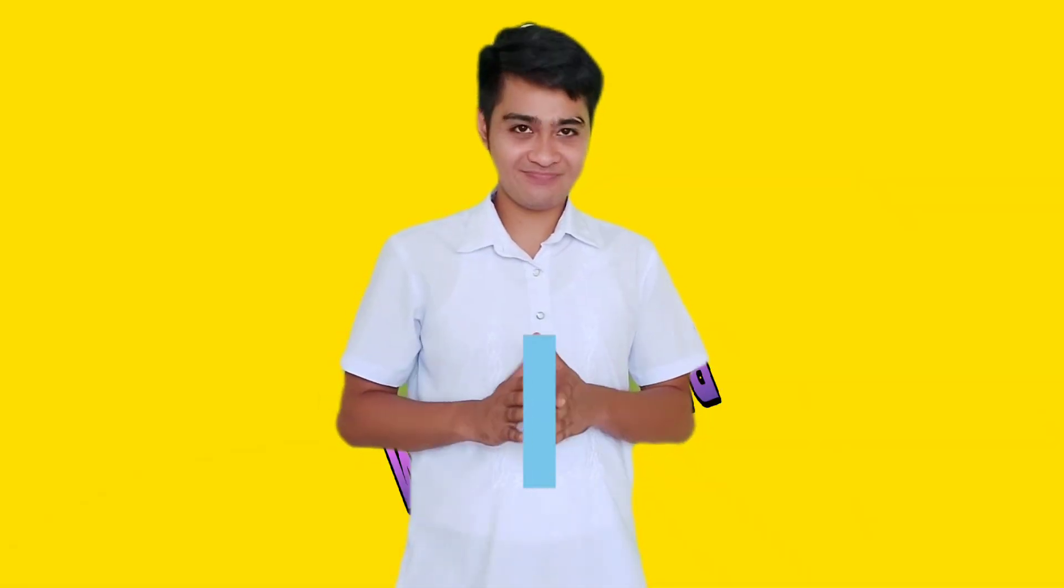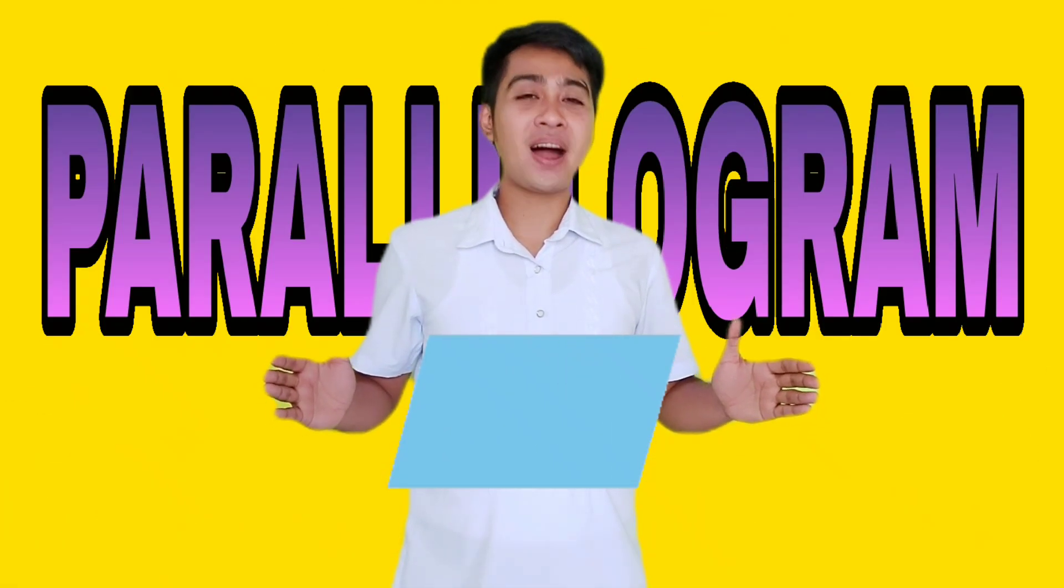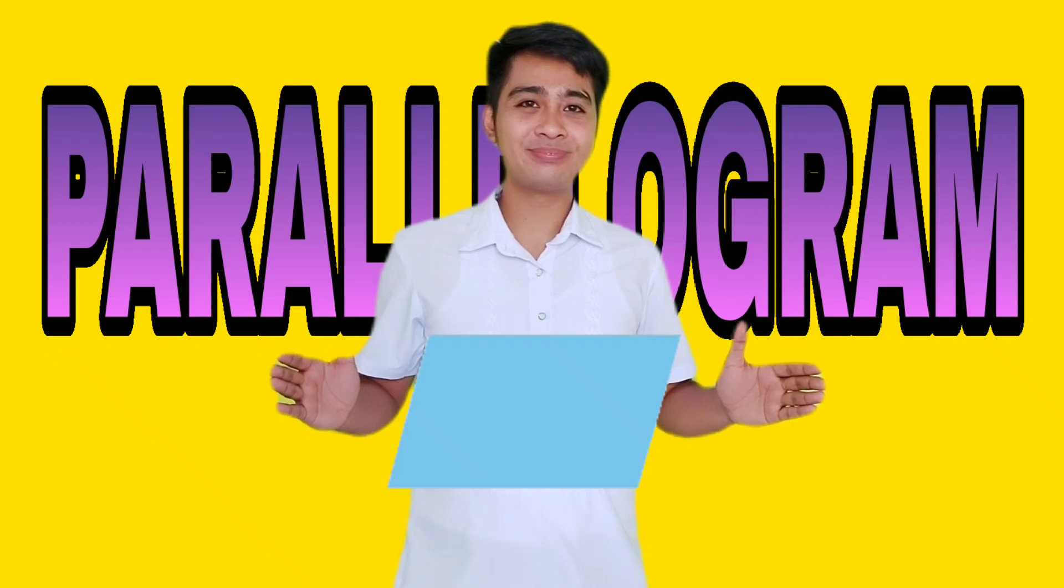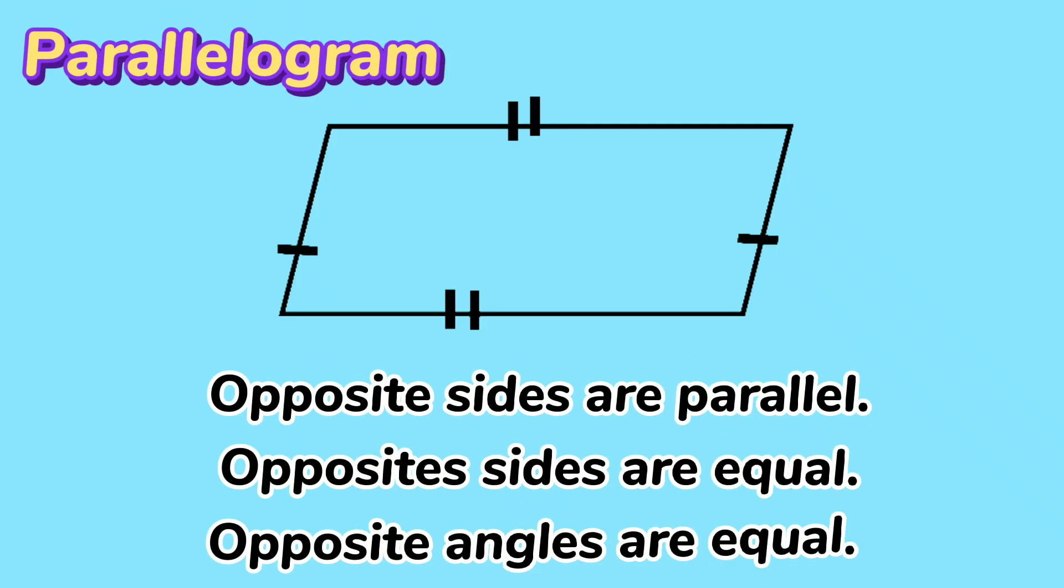The first one is parallelogram. This is the parallelogram. Opposite sides are parallel. Opposite sides are equal. And opposite angles are equal.